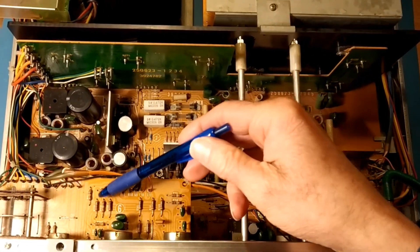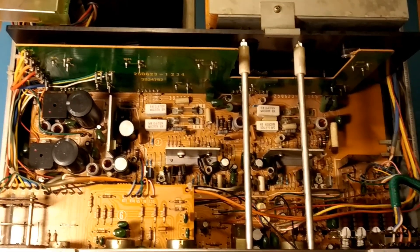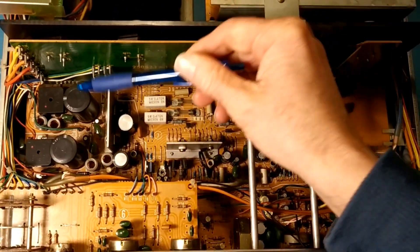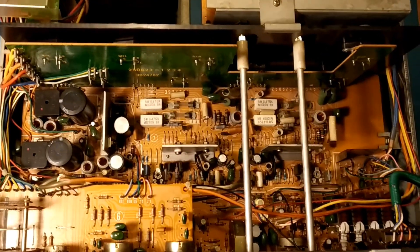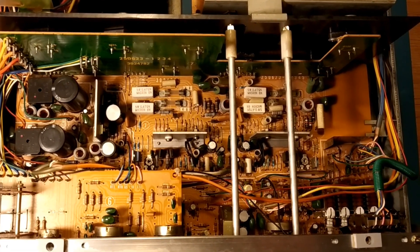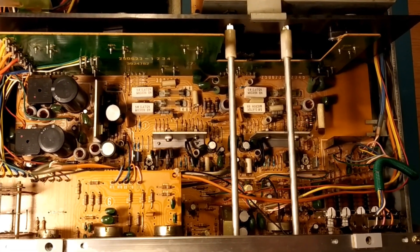Looking inside, we've got a passive tone control board there with no transistors or anything on it. Over in the far left, we've got a power supply which gives out plus or minus 60 volts. That's slightly higher than the circuit diagram says it should be, but it's not a problem.